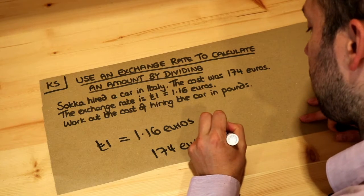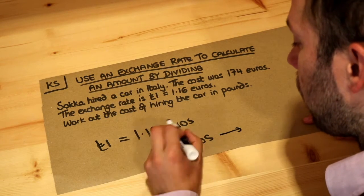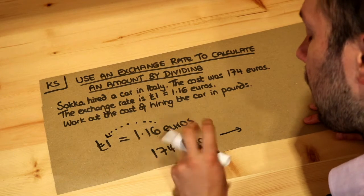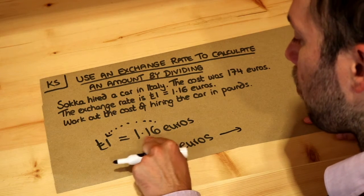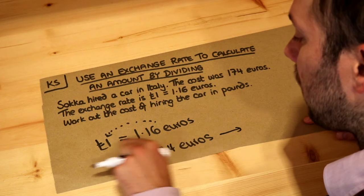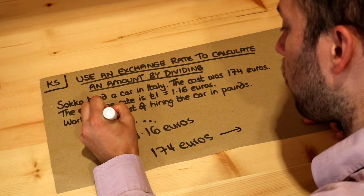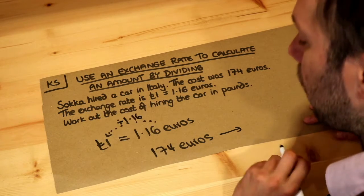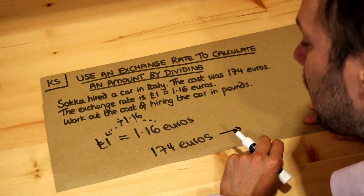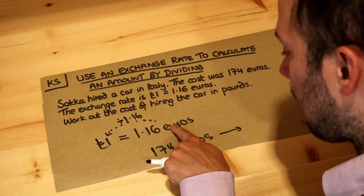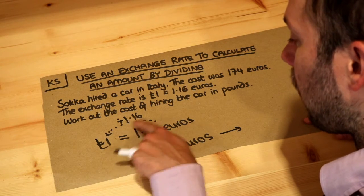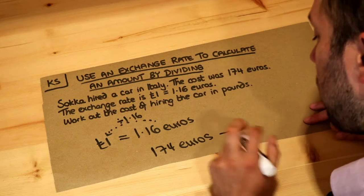Let's think about how we get from euros to pounds. How do we get from 1.16 to 1? Well, we're getting smaller — we divide 1.16 by 1.16, and anything divided by itself gives you 1. So therefore, to get from euros to pounds, we're going to divide by 1.16.